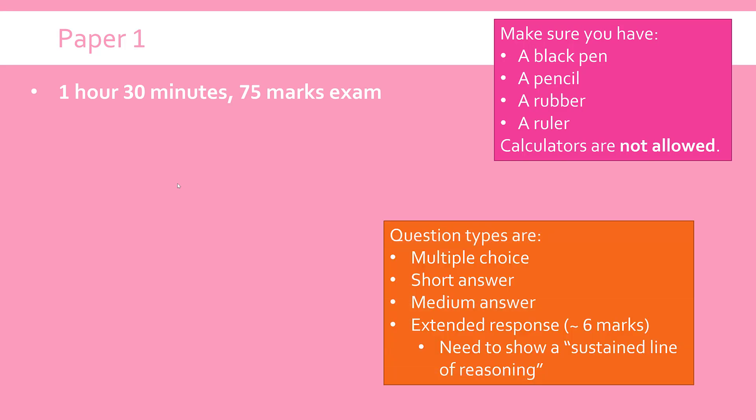The exam itself, apart from the oddity about telling you the topic, is very typical: a mix of multiple choice, short written answers, and medium answers. There'll usually be one six-marker, which is an extended response question where you discuss a topic — often ethics, but not always. You're marked not just on content but on how you're presenting, how clear and coherent your answer is. The phrase often used is 'sustained line of reasoning' — your answer has to flow, connect up, and be logical. It's not assessing spelling and grammar, although clarity could affect the sustained line of reasoning.